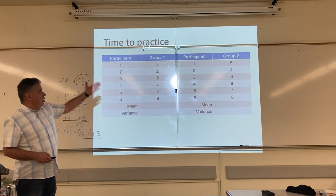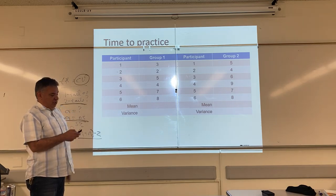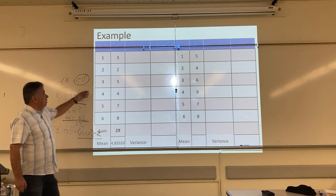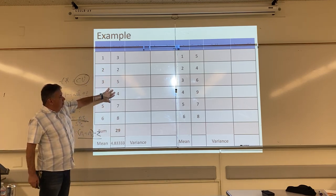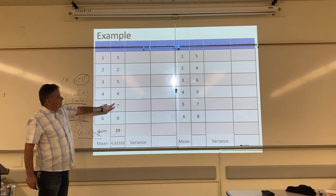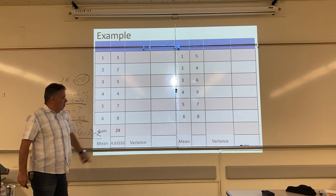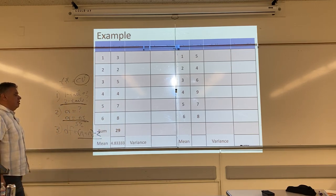So I add up all the scores, divide by my sample size, that gives me the mean. So I'm going to do that. So 5, 10, plus 4 is 14, plus 7 is 21, plus 8 is 29, 29 divided by 6, 4.8333.